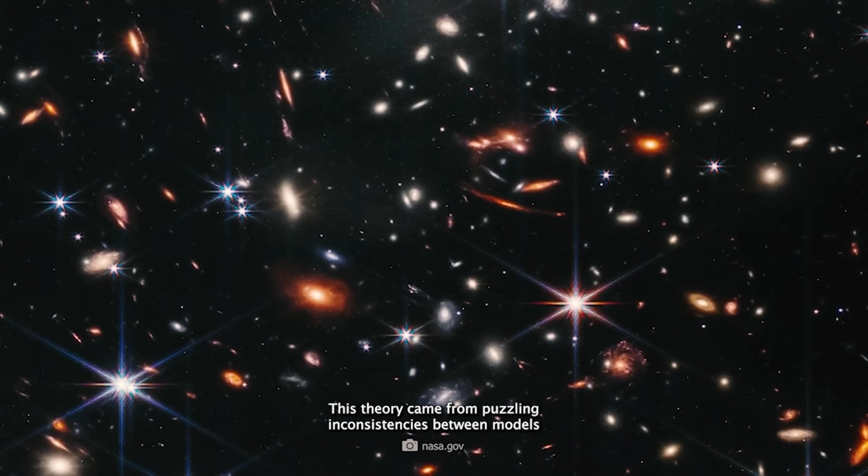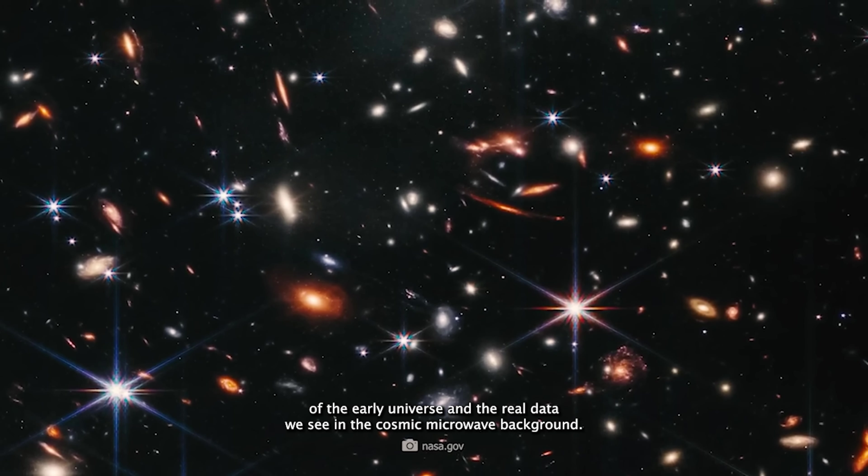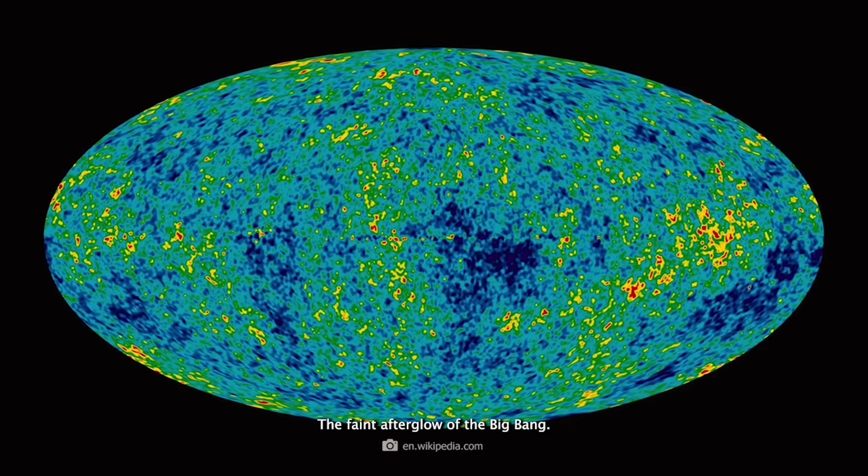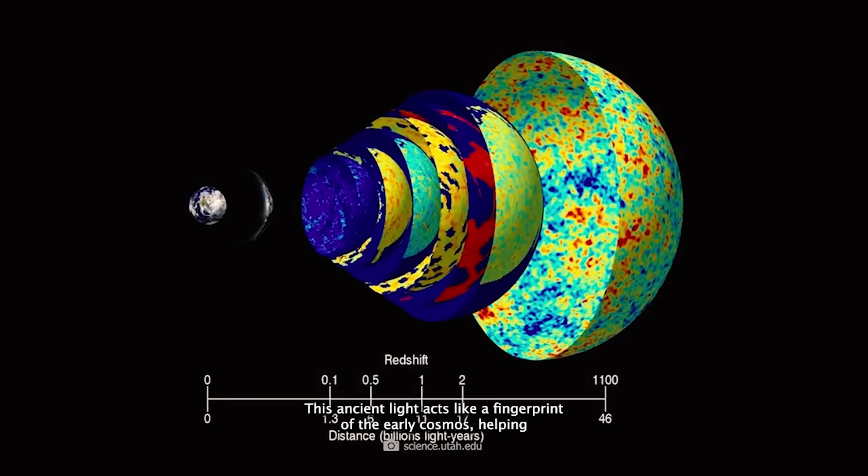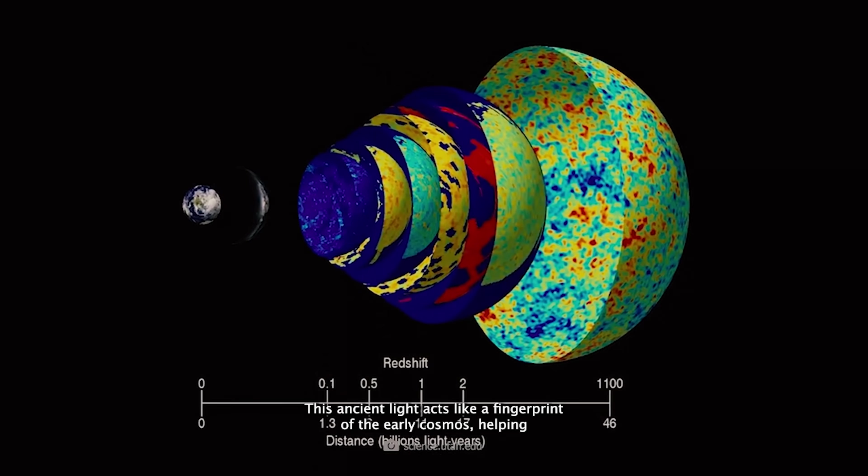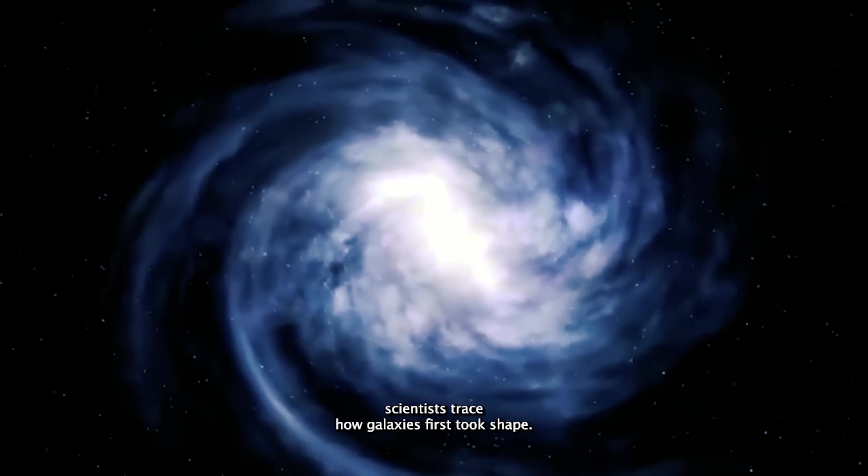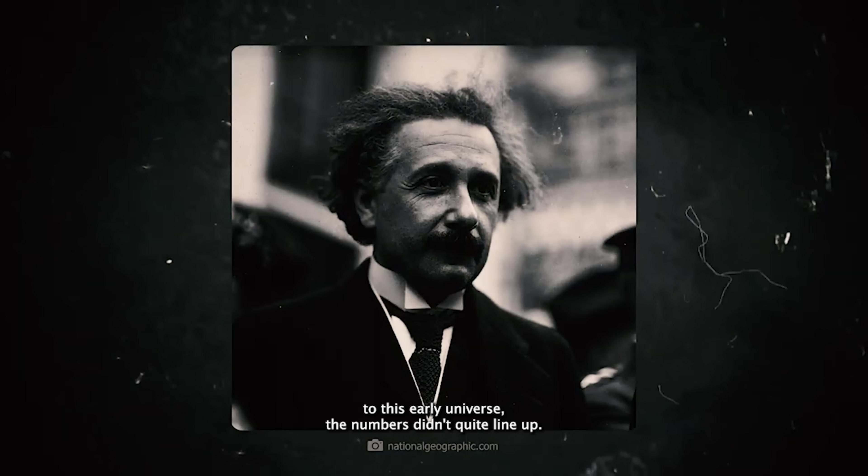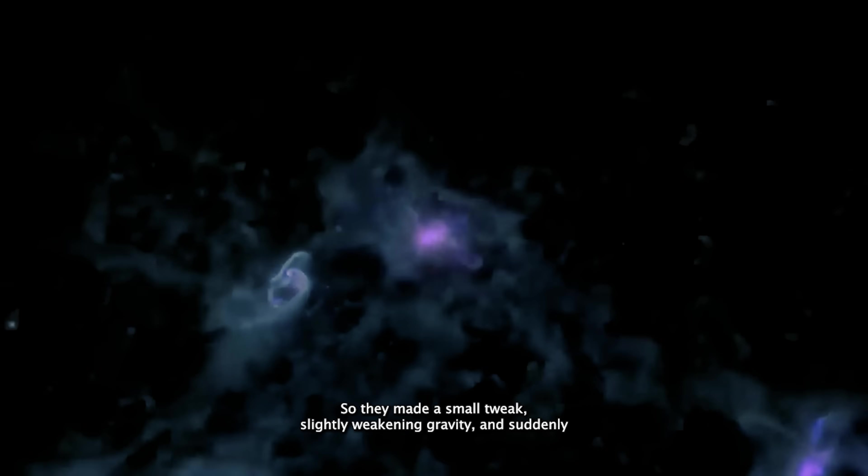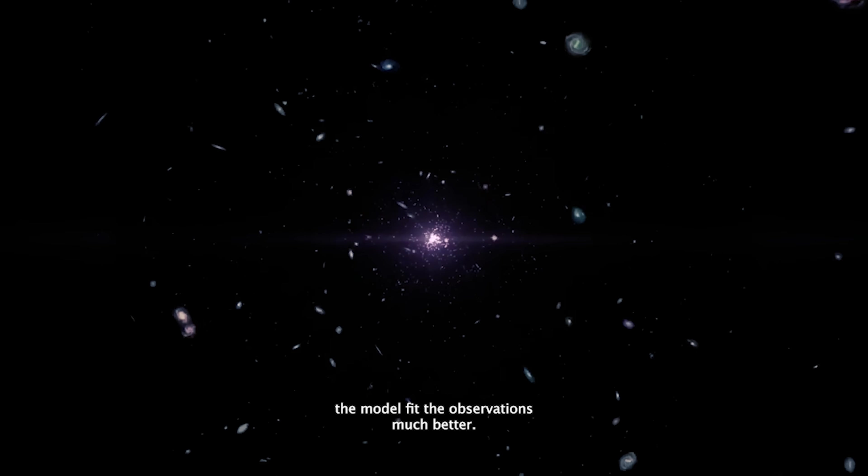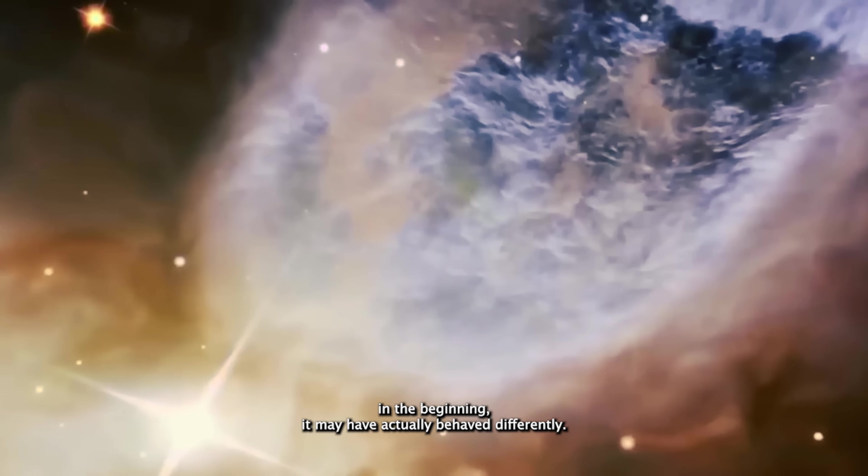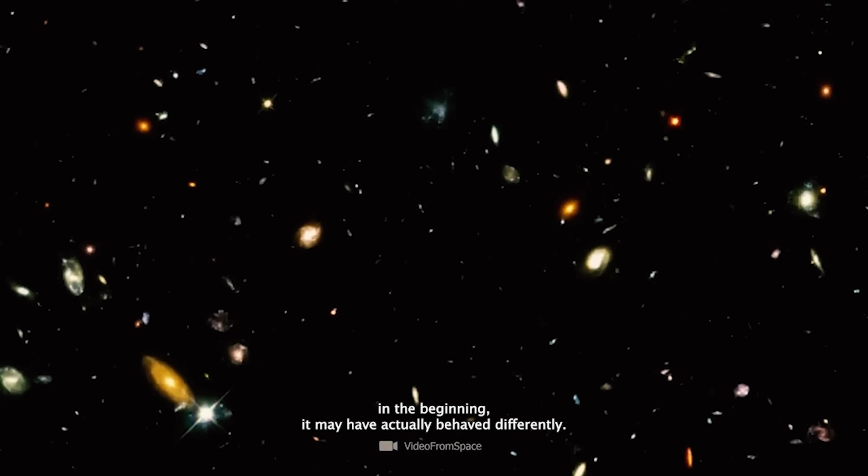This theory came from puzzling inconsistencies between models of the early universe and the real data we see in the cosmic microwave background, the faint afterglow of the Big Bang. This ancient light acts like a fingerprint of the early cosmos, helping scientists trace how galaxies first took shape. But when researchers applied Einstein's equations to this early universe, the numbers didn't quite line up. So they made a small tweak, slightly weakening gravity, and suddenly the model fit the observations much better. In other words, our universe may not only look different in the beginning, it may have actually behaved differently.